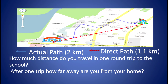Now, how much distance do you travel in one round trip to the school? It will be twice the actual path which is equal to 4 kilometers. Again, after one trip, how far away are you from your home? You have started from your home and again returned back to home, which means you are at the initial position — that is your home. Hence, you are 0 kilometers away from your home.